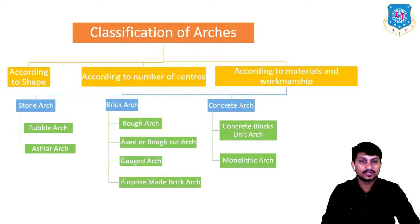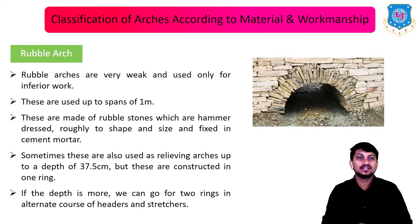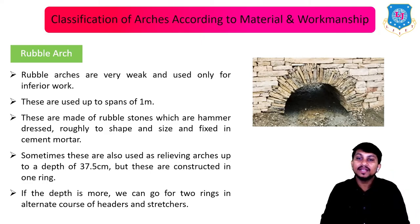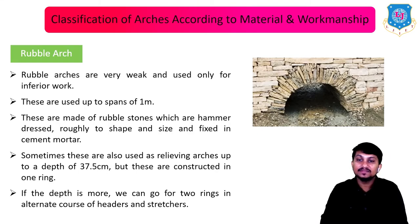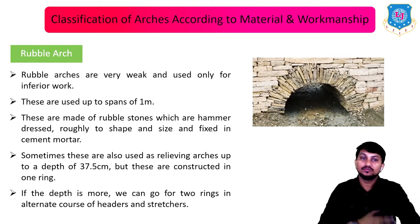Now let's see classification according to material and workmanship. The first type is stone arch, subdivided into rubble stone arch and ashlar stone arch. The rubble arch is very weak, used only for inferior work and spans up to one meter. These are made of rubble stones hammer-dressed roughly to shape and fixed in cement mortar. Sometimes used as relieving arches up to a depth of 37.5 cm, constructed in one ring, or two rings in alternate course of headers and stretchers for greater depth.